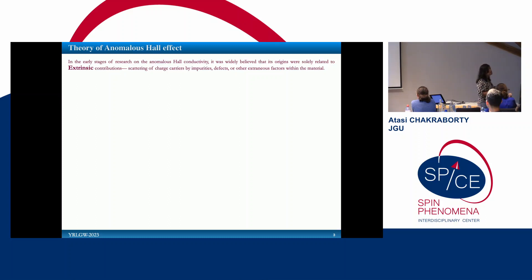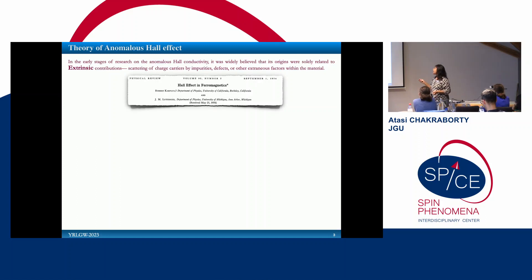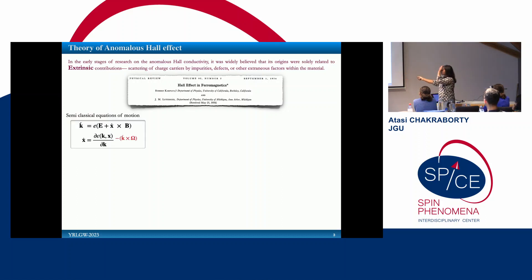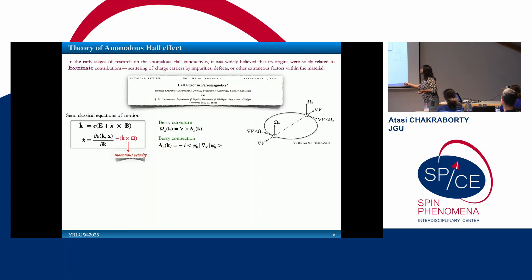Initial studies attributed the anomalous Hall effect to extrinsic origins — defects, impurities, scattering between charge carriers, and so on. But later, in 1954, Karplus and Luttinger introduced that the anomalous Hall effect can be intrinsic to the system. Writing down the semi-classical equation of motion of an electron, the velocity vector has two terms: the group velocity (rate of change of the wave packet center of mass) and a second term called the anomalous velocity, which is related to the Berry curvature of the system.